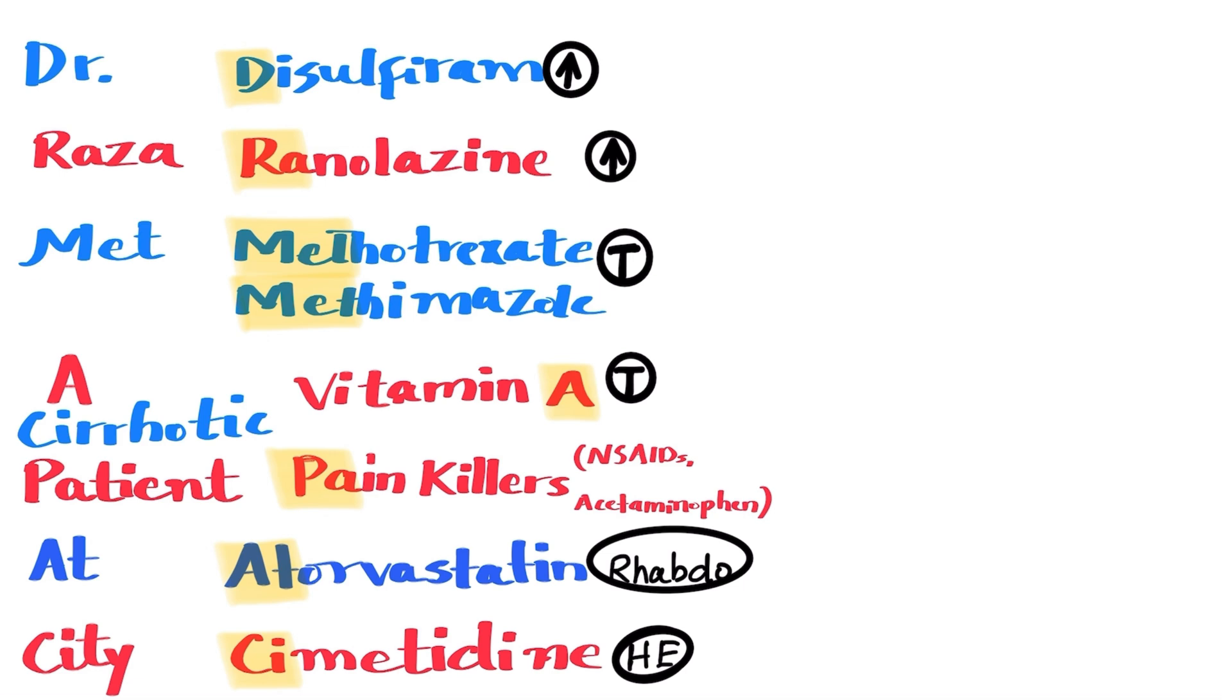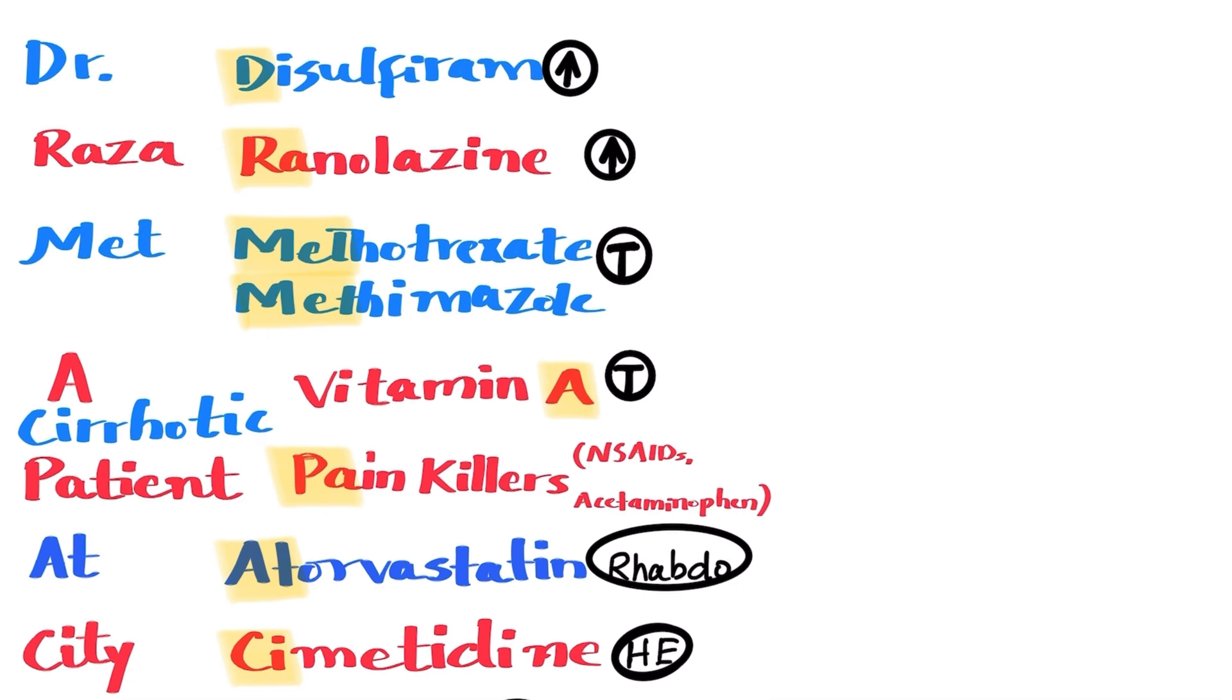Raza stands for ranolazine, which is used for chronic angina. This drug is metabolized by the liver P450 enzyme. So its level increases in patients with liver failure or cirrhosis, making it unsafe for them.